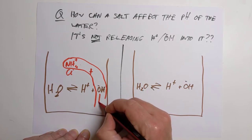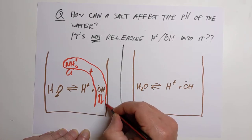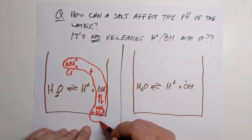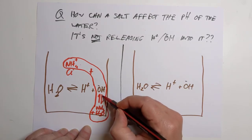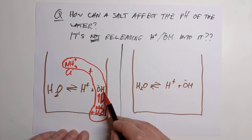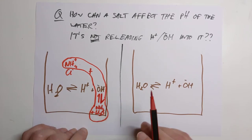And they will form an equilibrium mixture of ammonia molecules and water. Because that's what ammonia does. It's a weak base. In fact, this equilibrium much prefers to be on the molecule side. So you're going to steal away some of these hydroxides.